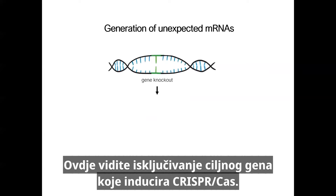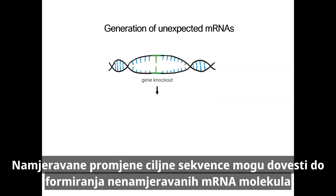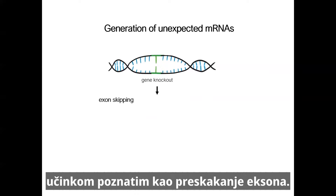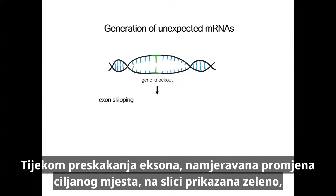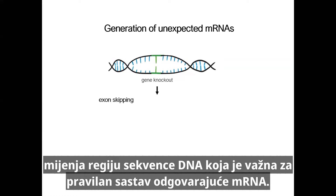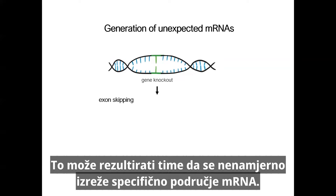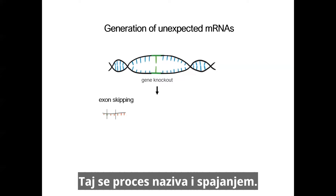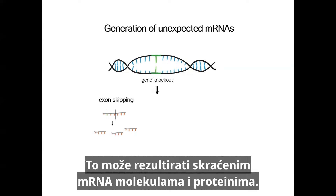Here you can see a gene knockout in the target gene induced by CRISPR-Cas. The intended changes at the target sequence can lead to the formation of unintended mRNAs by an effect known as exon skipping. During exon skipping, the intended change at the target site changes a region of the DNA sequence that is important for the correct composition of the corresponding mRNA. This can result in a specific area of the mRNA being unintentionally cut out — a process also called splicing — resulting in truncated mRNAs and proteins.